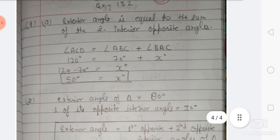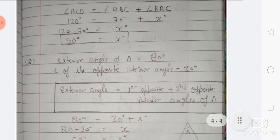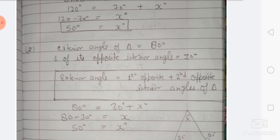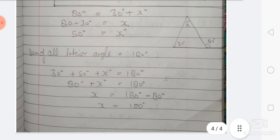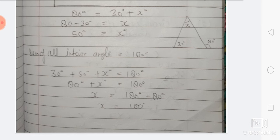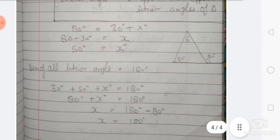Question number 2: the exterior angle of a triangle is 30 degrees more than one of the opposite interior angles. The sum of the opposite angles involves one being 30 degrees, and you have to find the other one. You will create a diagram and then solve it. This gives us 80 and 30, so the other angle is 50.